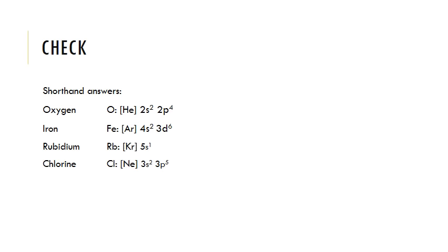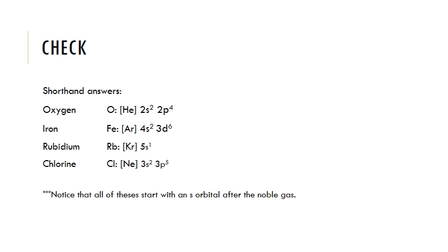That should be everything — hopefully you understand or have reviewed electron configurations. One more thing to notice: in each of these shorthand configurations, after the noble gas, each one starts with an s orbital. Because noble gases are on the right side, the next electrons to fill for the following element always start with an s orbital. If you have any questions, send a message or come ready to ask in class.